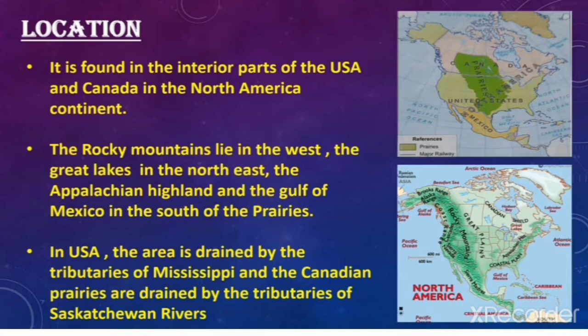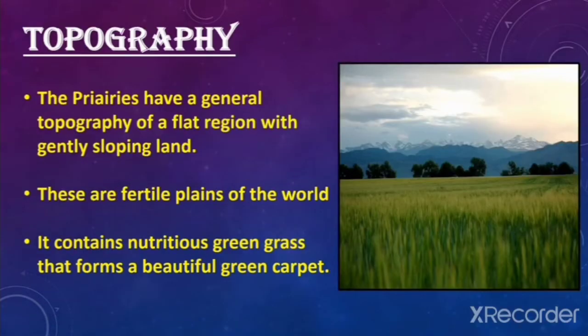In the USA, the area is drained by the tributaries of the Mississippi River, and the Canadian prairies are drained by the tributaries of the Saskatchewan River. The prairies have a general topography of a flat region with gently sloping land. These are fertile plains of the world and contain nutritious green grass that forms a beautiful green carpet.